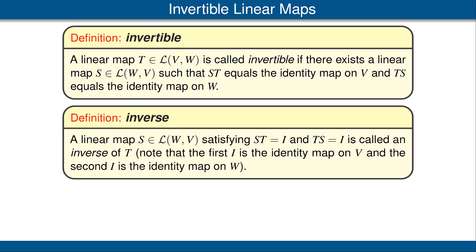Continuing with our assumption that T is a linear map from V to W, we say that a linear map S from W to V is an inverse of T if ST equals I and TS equals I. Notice that these two I's are not the same. When we write ST equals I, we're thinking of I as the identity map on V, and when we write TS equals I, we're thinking of I as the identity map on W. But it's convenient to use the same notation I for both identity maps.